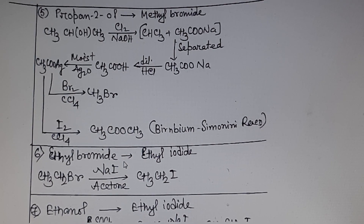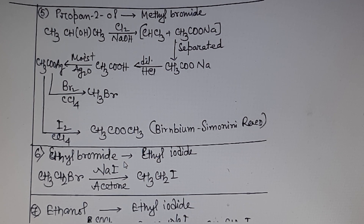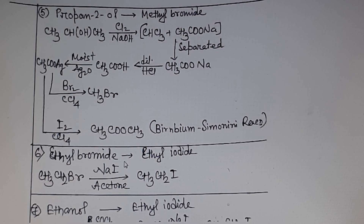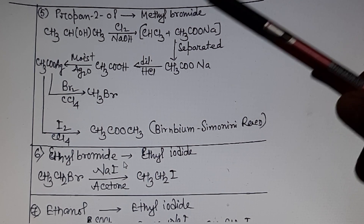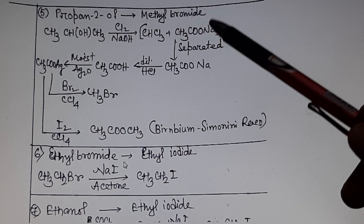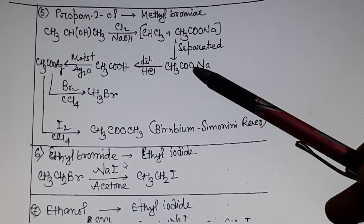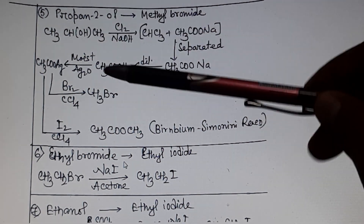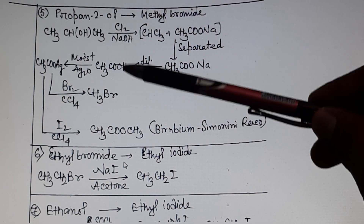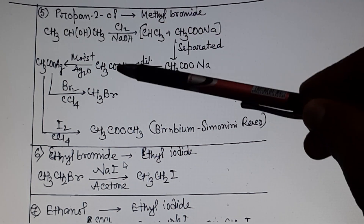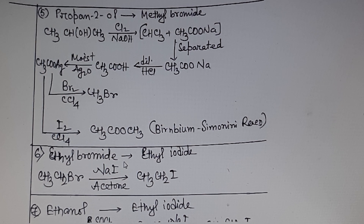Problem 5: propan-1-ol to methyl bromide and methyl acetate. Propan-1-ol can undergo the iodoform or chloroform reaction. Propan-1-ol reacts with chlorine in the presence of NaOH to form chloroform, and sodium acetate is the by-product. Separate the mixture — add dilute acid to sodium acetate to form acetic acid. Propan-1-ol to acetic acid is simple using the haloform reaction.